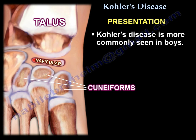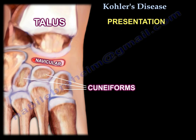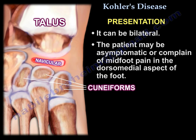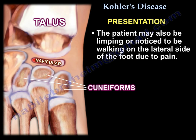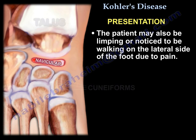Kohler's disease is more commonly seen in boys. It can be bilateral. The patient may be asymptomatic or complain of midfoot pain in the dorsomedial aspect of the foot. The pain may be related to physical activities. The patient may also be limping or noticed to be walking on the lateral side of the foot due to pain.